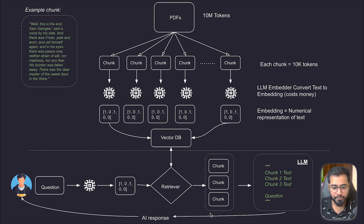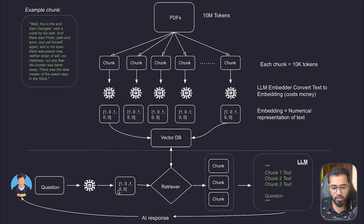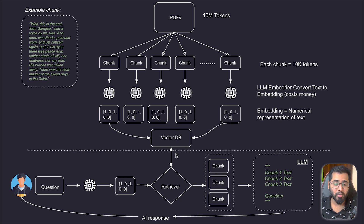Now let's look at the second part of the workflow. It starts with the user asking a question about the book — let's say the book is Lord of the Rings. So let's say the question is: what is the name of Frodo's sword? Now what we do is we also convert this question, that prompt, into an embedding as well. The next thing is we have a retriever component that takes this embedding — the mathematical representation of the prompt — and then asks the vector store to give the top five relevant chunks for this particular question.